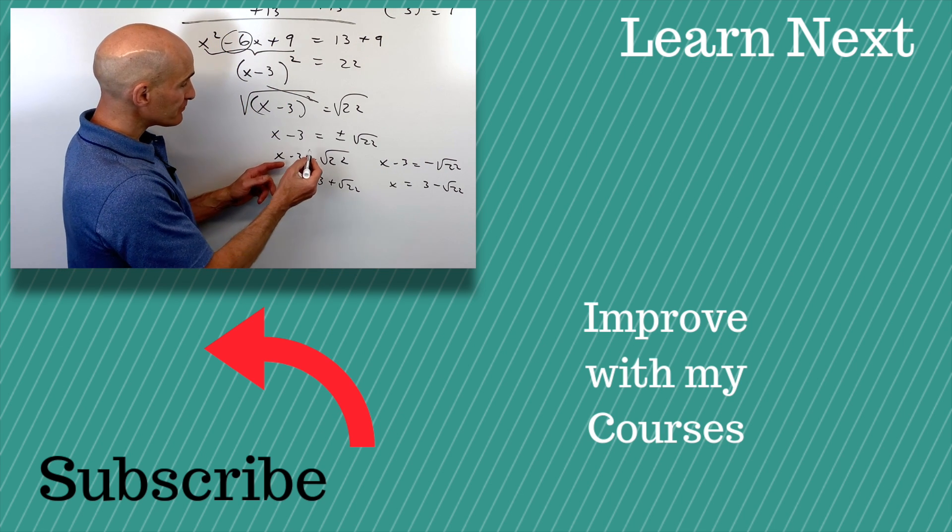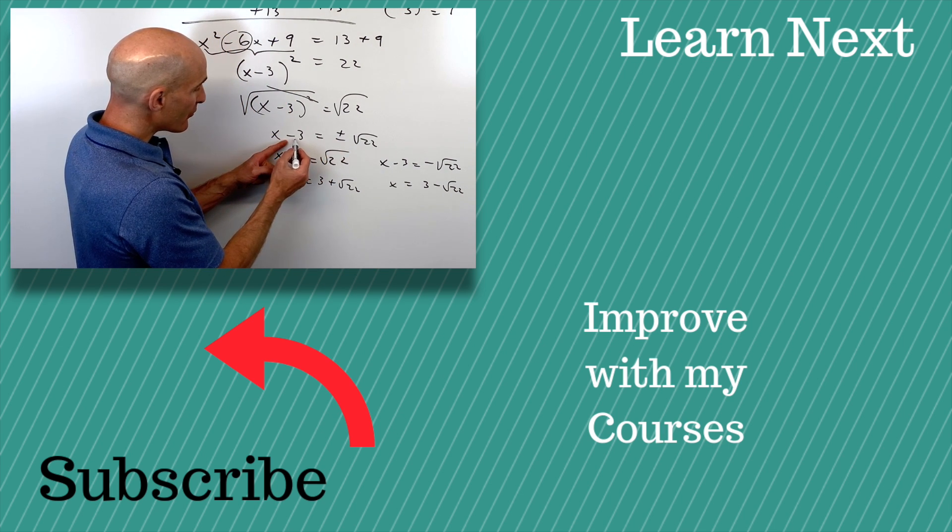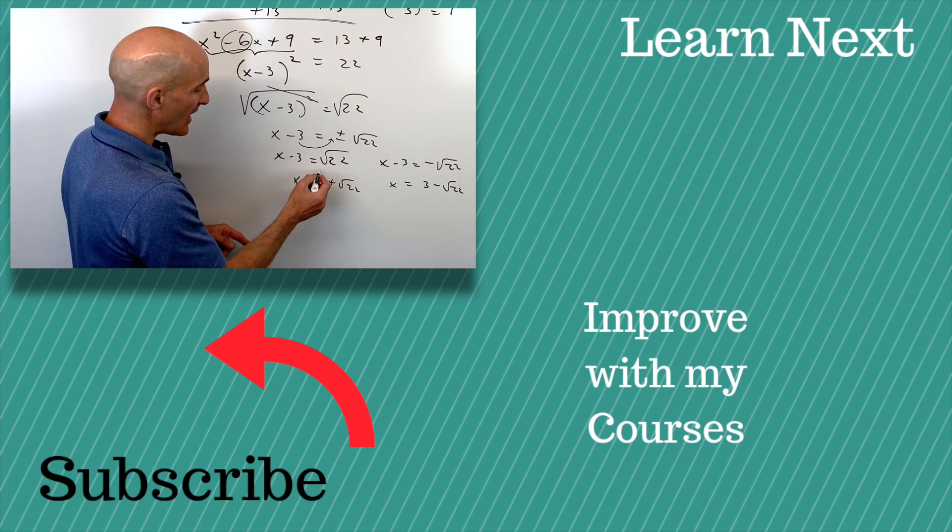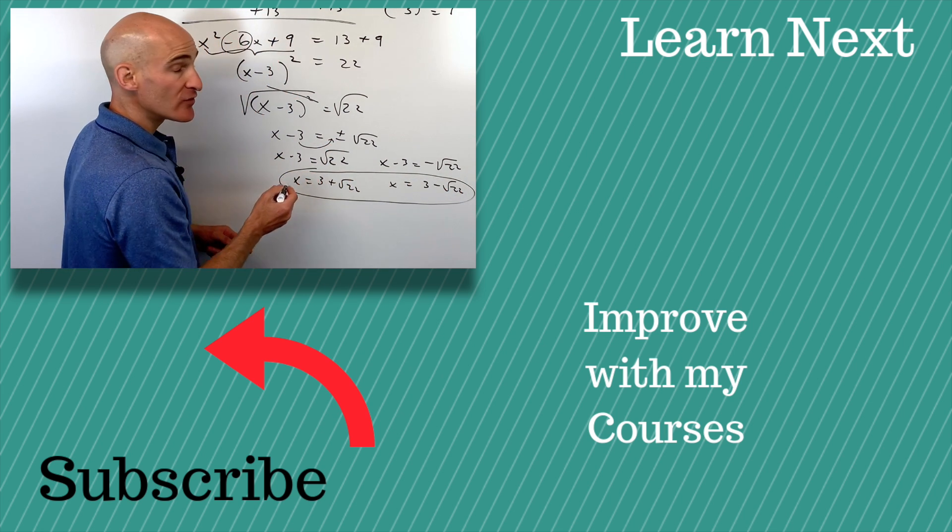The other option is you can just, when you add 3, make sure that you put the 3 in front of the plus or minus. So 3 plus or minus square root of 22, and you've solved it.